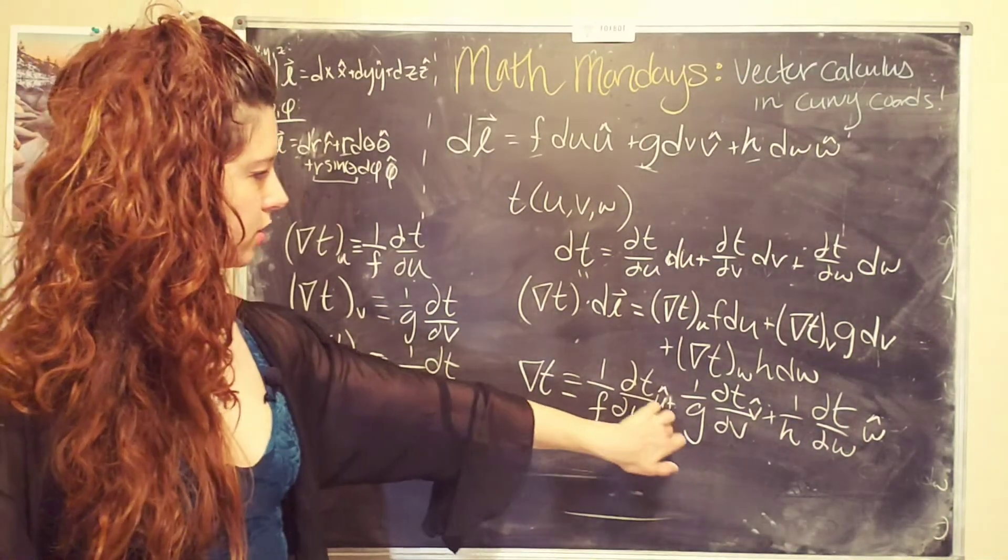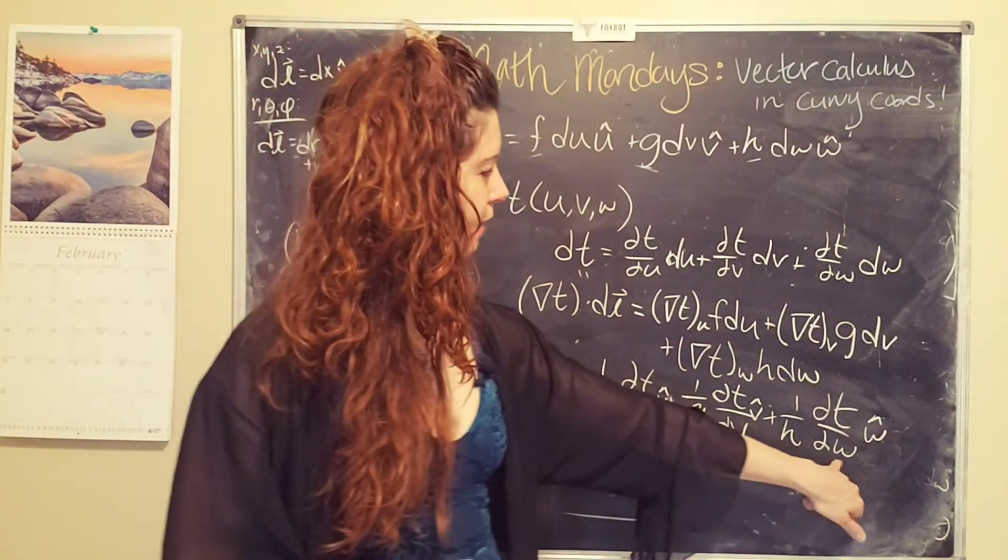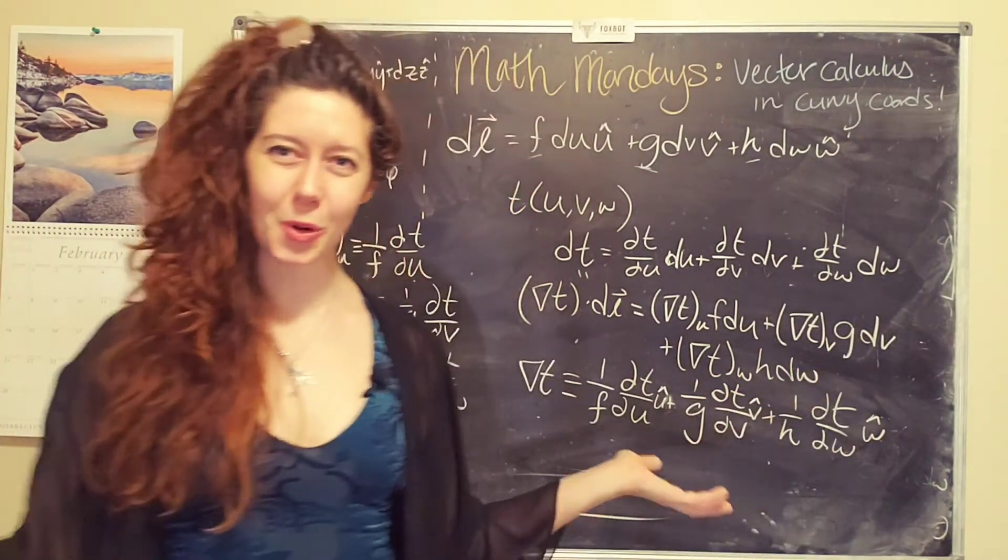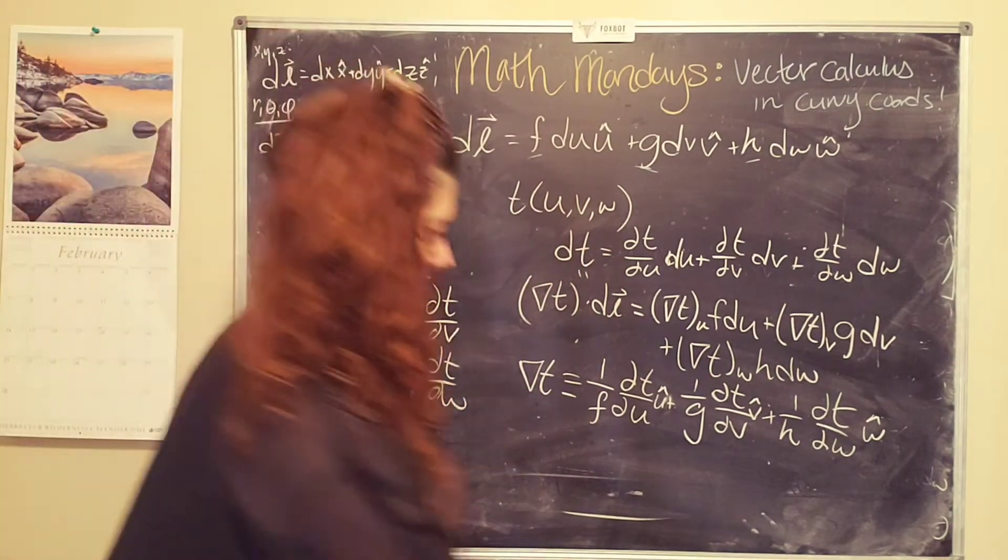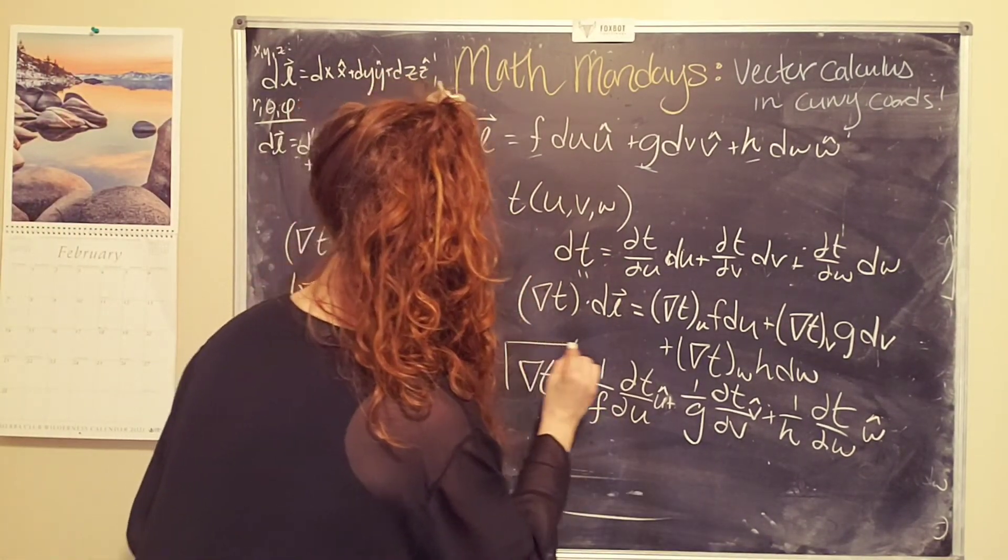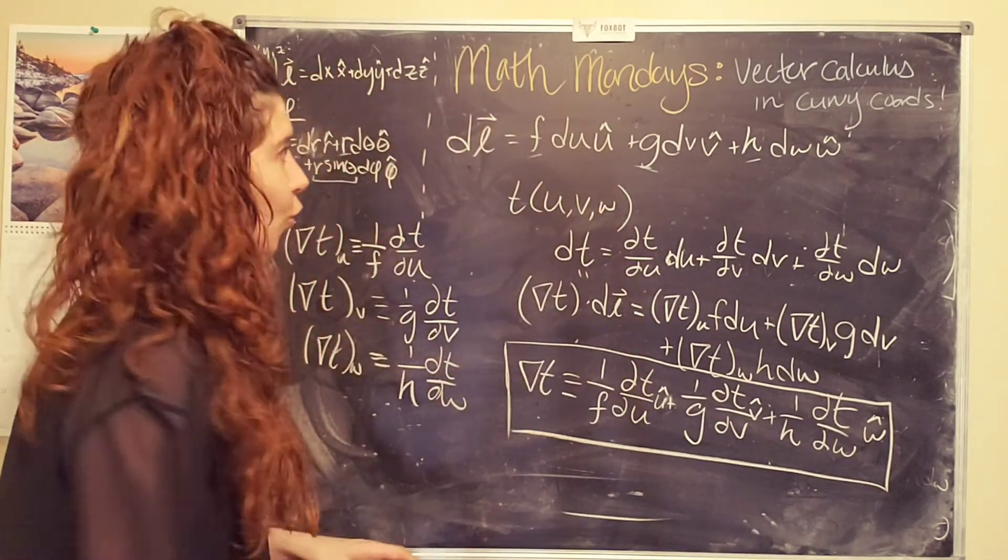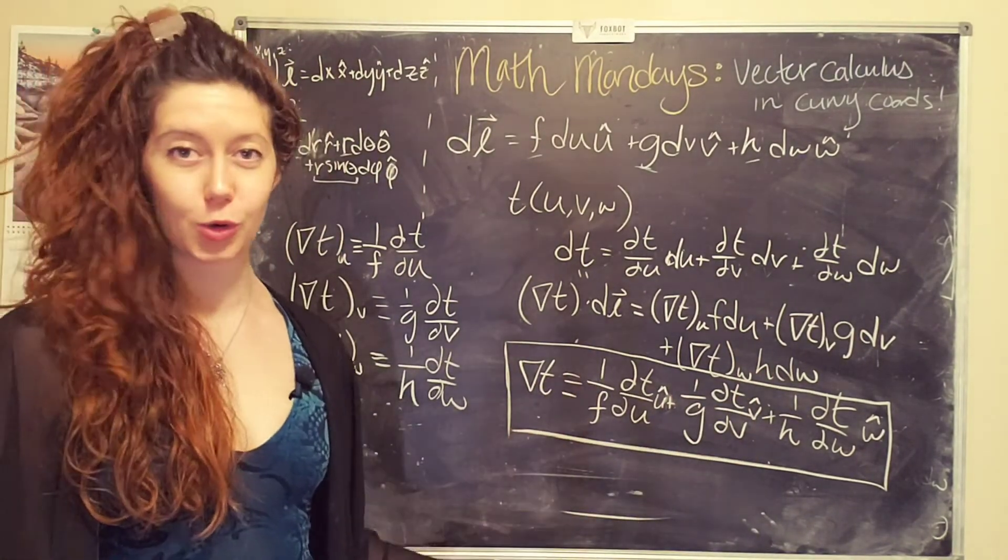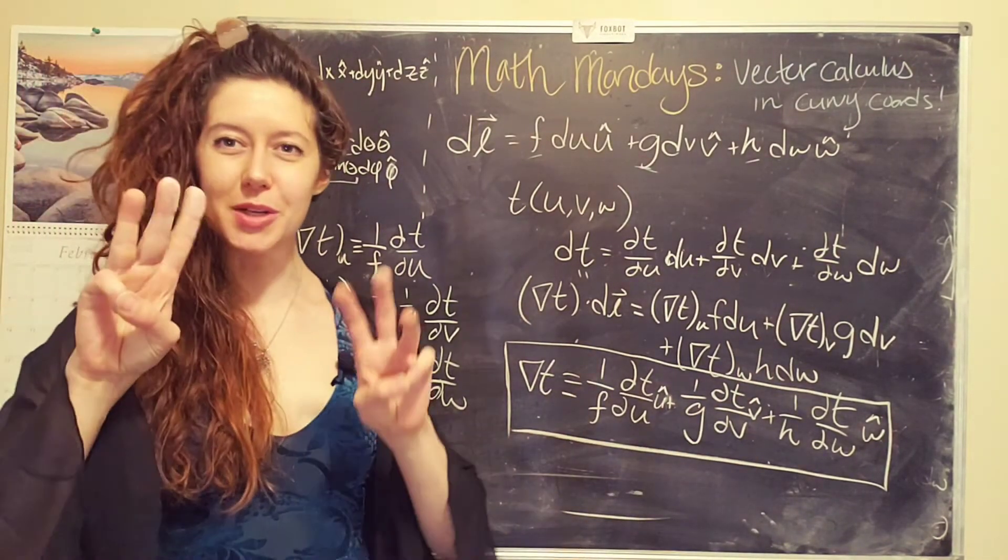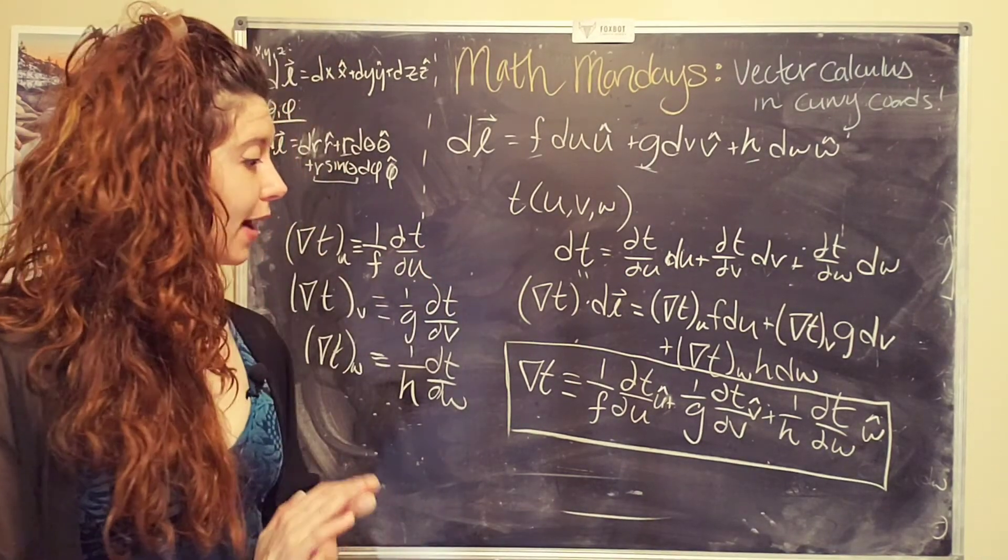And then we just change these variables appropriately to r, r-hat, theta, theta hat, and phi, phi-hat. Pretty cool, right? I love this. So this is how we can come up with a generic formula for the gradient for any orthogonal coordinate system in three-dimensional space.